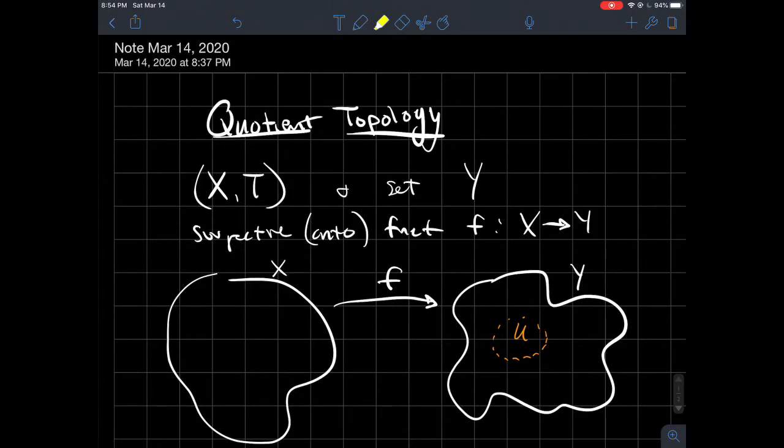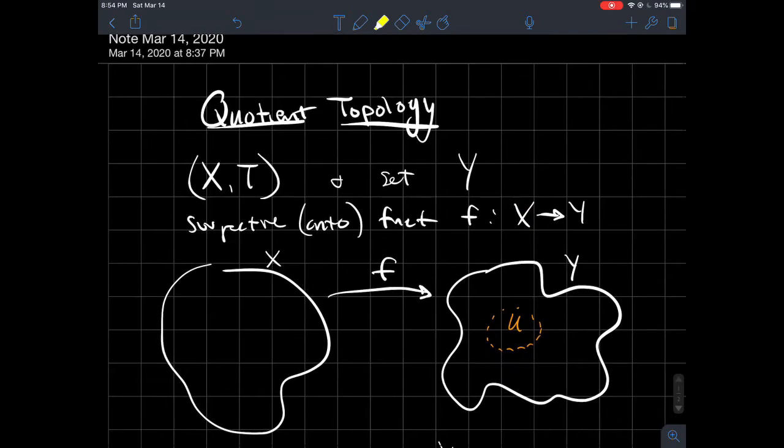The other thing we've got in our setup is a surjective, or onto, function from X onto Y. In other words, every point in Y is the output of something from X.